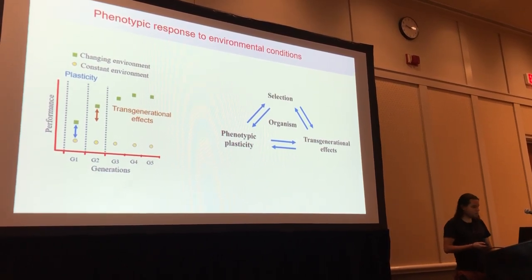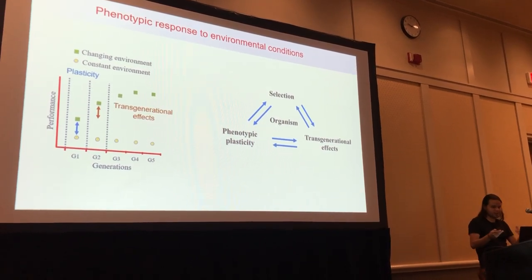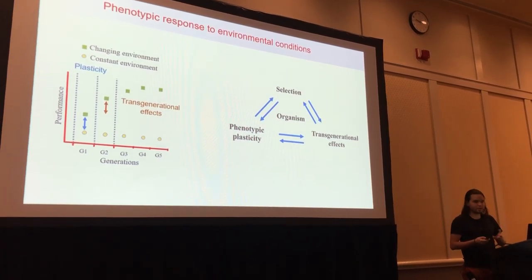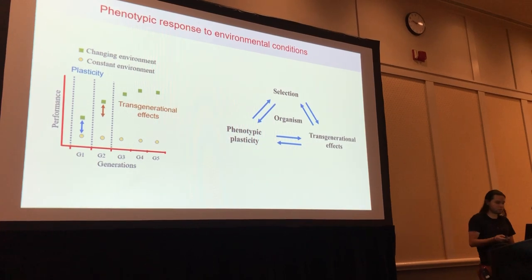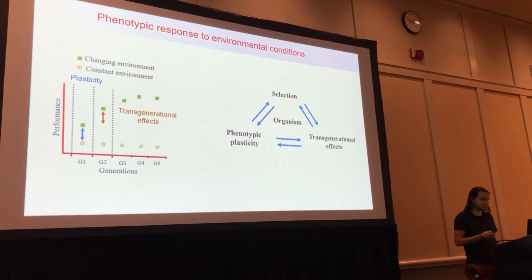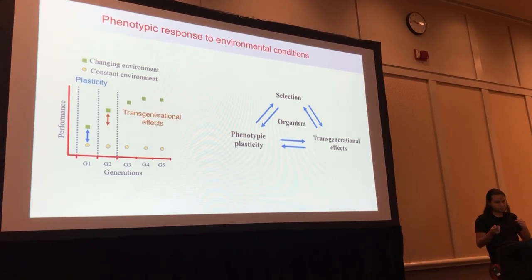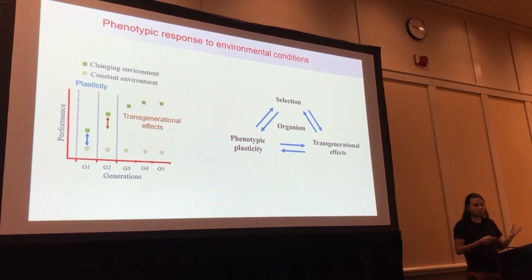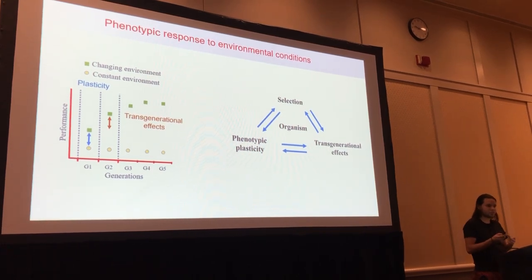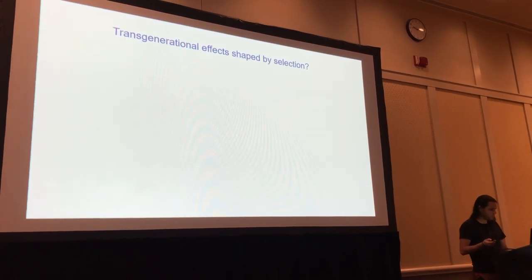We also have a lot of information about the interaction between plasticity and selection — when selection can shape plasticity, or when plasticity can modify or influence the effects of selection. But now that we have these transgenerational effects, there is not very clear information about all these interactions between transgenerational effects, selection, and plasticity, or even what kind of interaction is happening when plasticity and transgenerational effects are occurring in the same trait. There is not too much information on that.